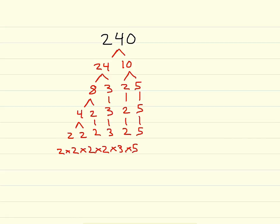Next you need to make sure that 2 times 2 times 2 times 2 times 3 times 5 equals 240. 2 times 2 is 4, times 2 is 8, times 2 is 16. Let's see if 16 times 3 times 5 equals 240. 16 times 3 is 48. Let's multiply 48 by 5: 5 times 8 is 40, carry your 4. 5 times 4 is 20, plus 4 is 240. So that is good.